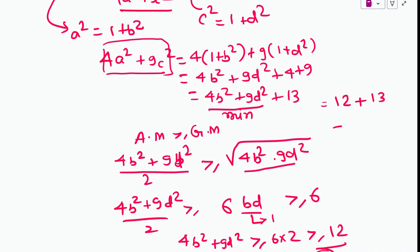Therefore the minimum value of 4a² + 9c² = 12 + 13 = 25. The answer is 25. Please watch this video completely — hope you liked it. I'll be putting up more content, so please like and subscribe to the channel.